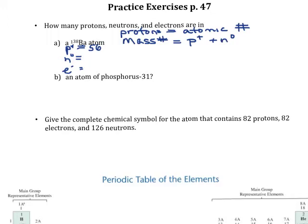The mass number is given in this isotope notation as 138. So we know we've got a total mass of 138, and we know that 56 of that is because of protons. Whatever's left over is due to the neutrons. So if we solve for neutrons, we can see that there must be 82 neutrons, because 56 plus 82 gives us 138.